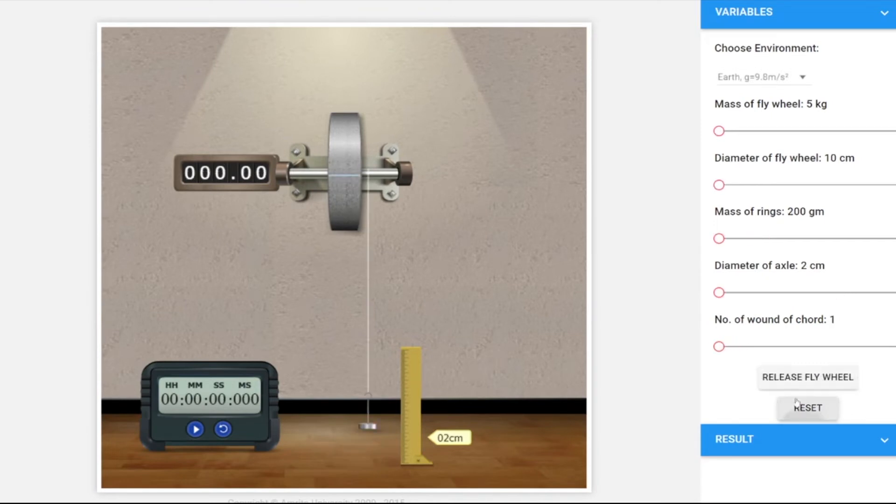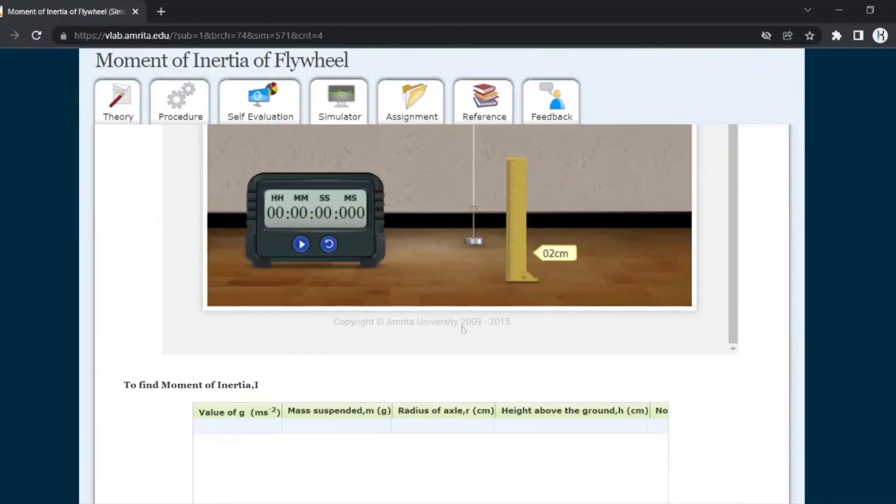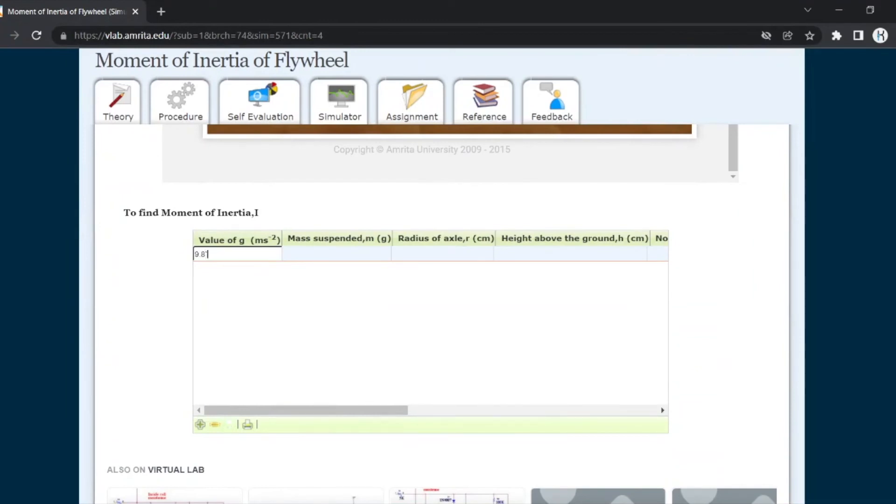Now let's fill the observation table. G is 9.8, the gravitational force value for Earth. The mass of the string we first took is 200 grams, the radius is 1 centimeter, height we first took was 2 centimeters, number of windings is 1, number of revolutions it performed is 22.19, and the time it took is 42.345 seconds. As you can see, angular velocity omega and the moment of inertia are already calculated by the computer, but you can calculate manually using omega equals 4πn/t and moment of inertia using the formula shown.